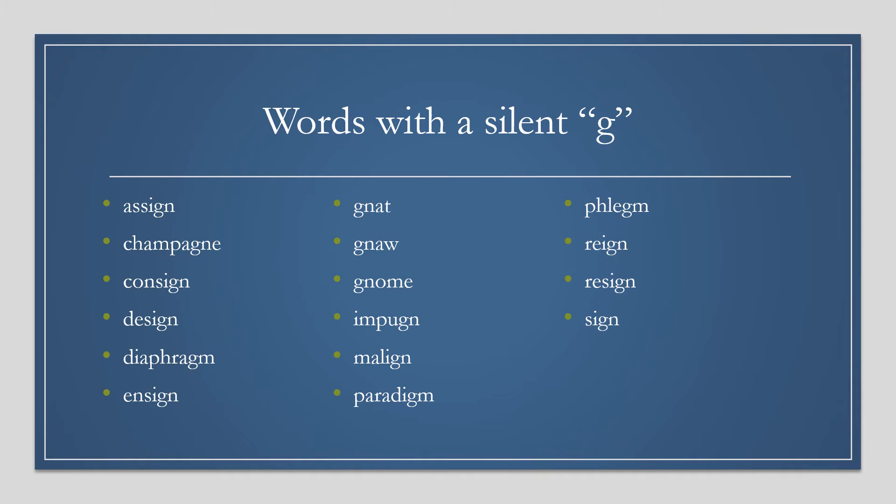Words with a silent G: assign, champagne, consign, design, diaphragm, ensign, gnat, gnaw, gnome, impugn.